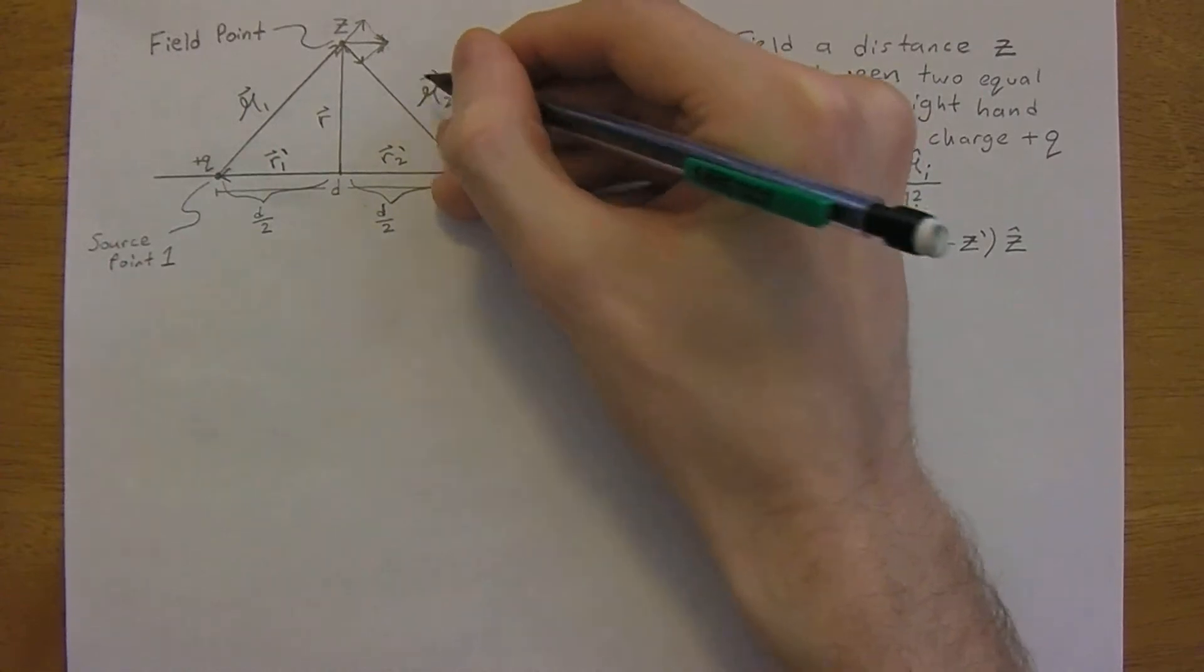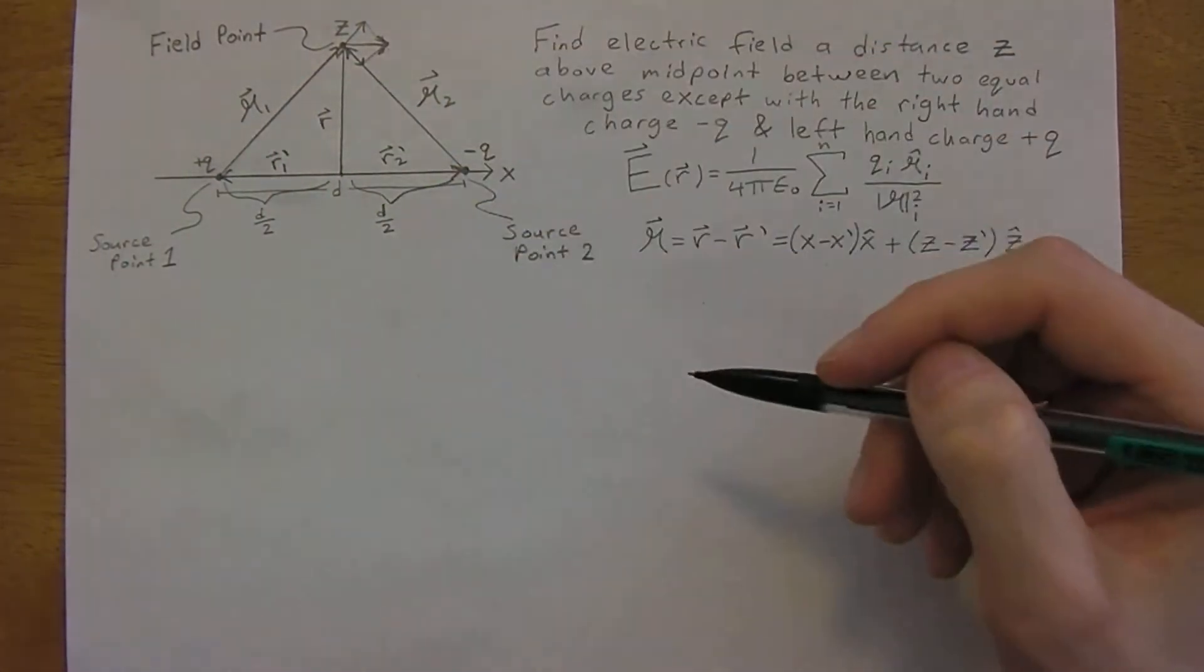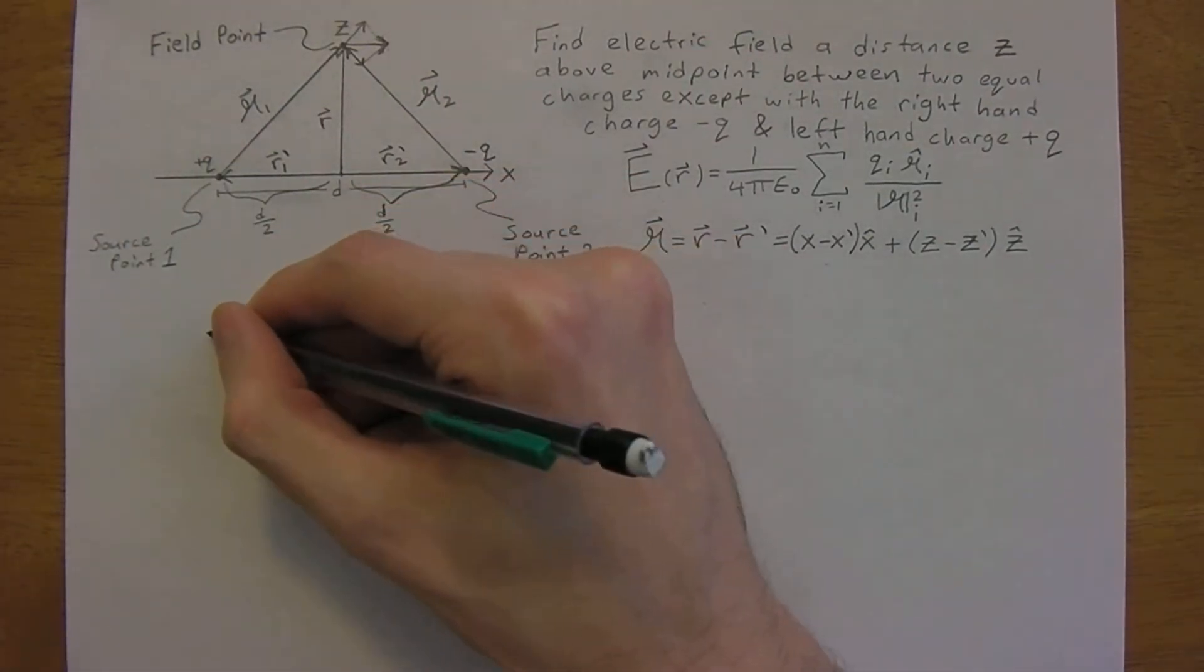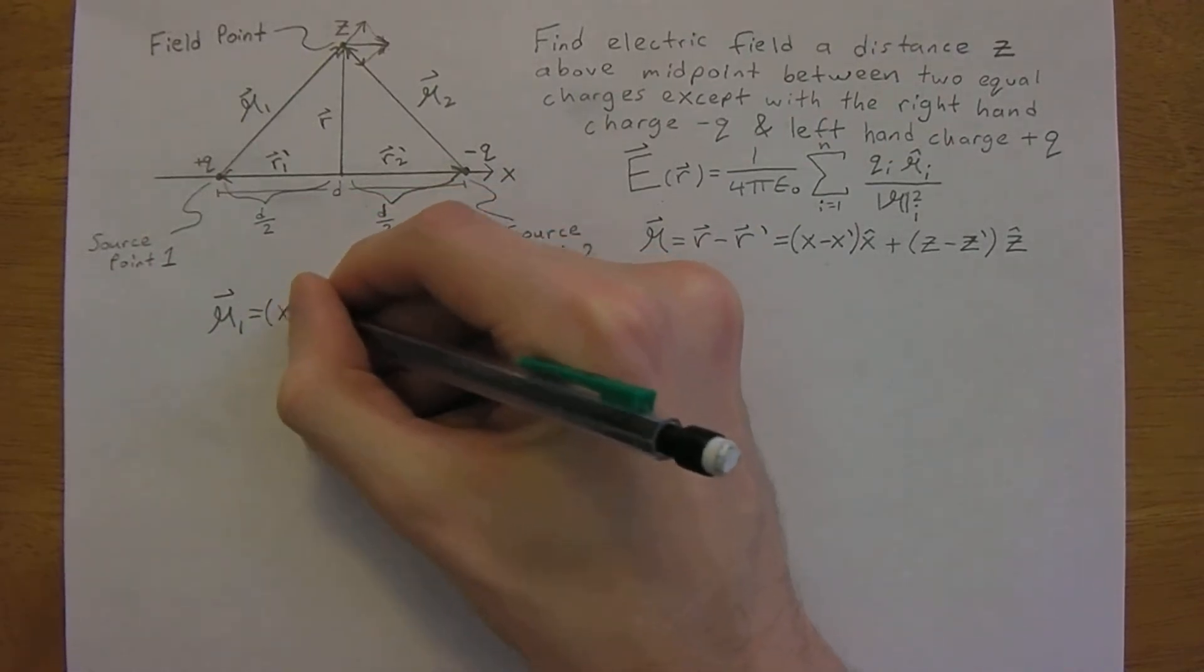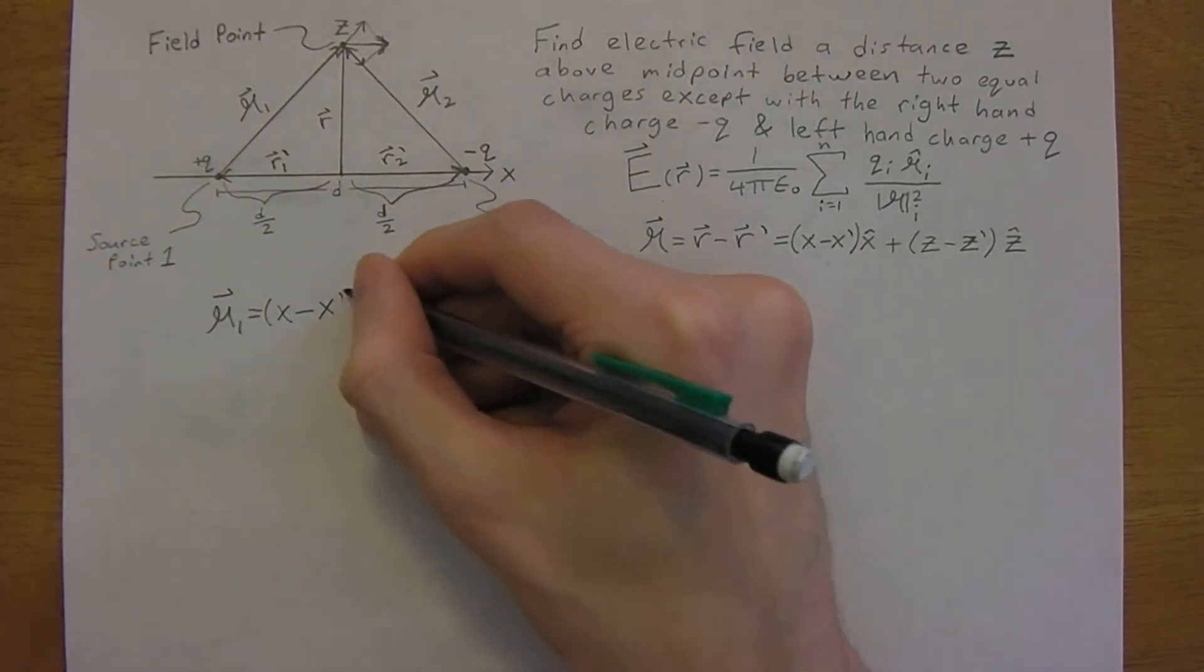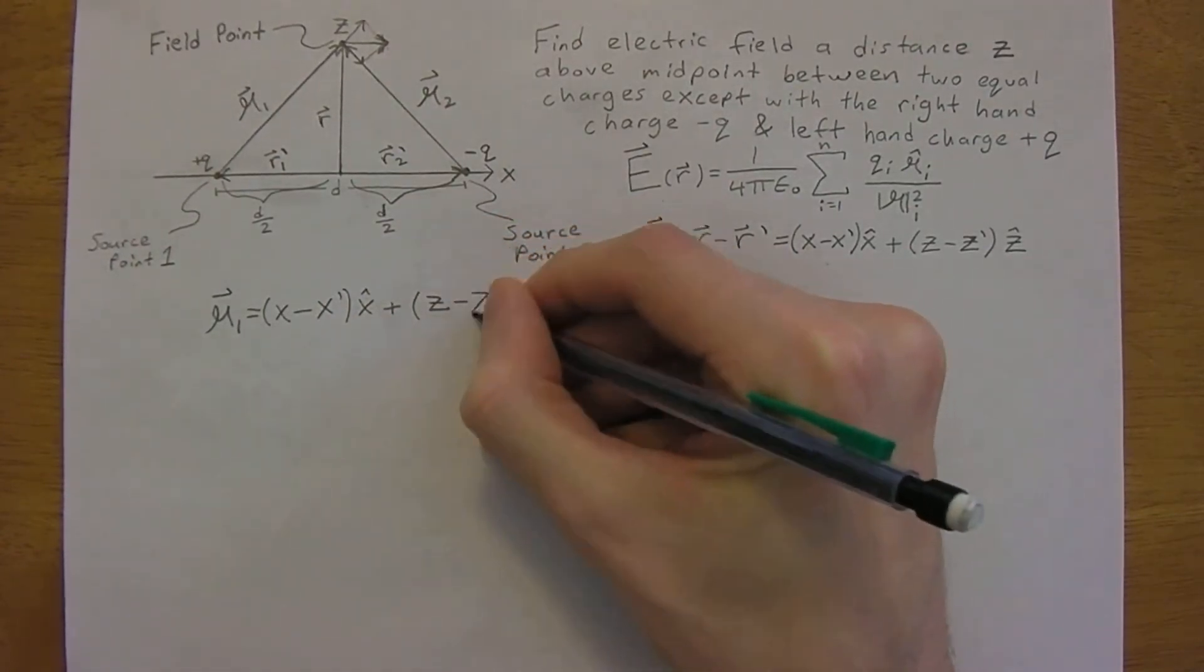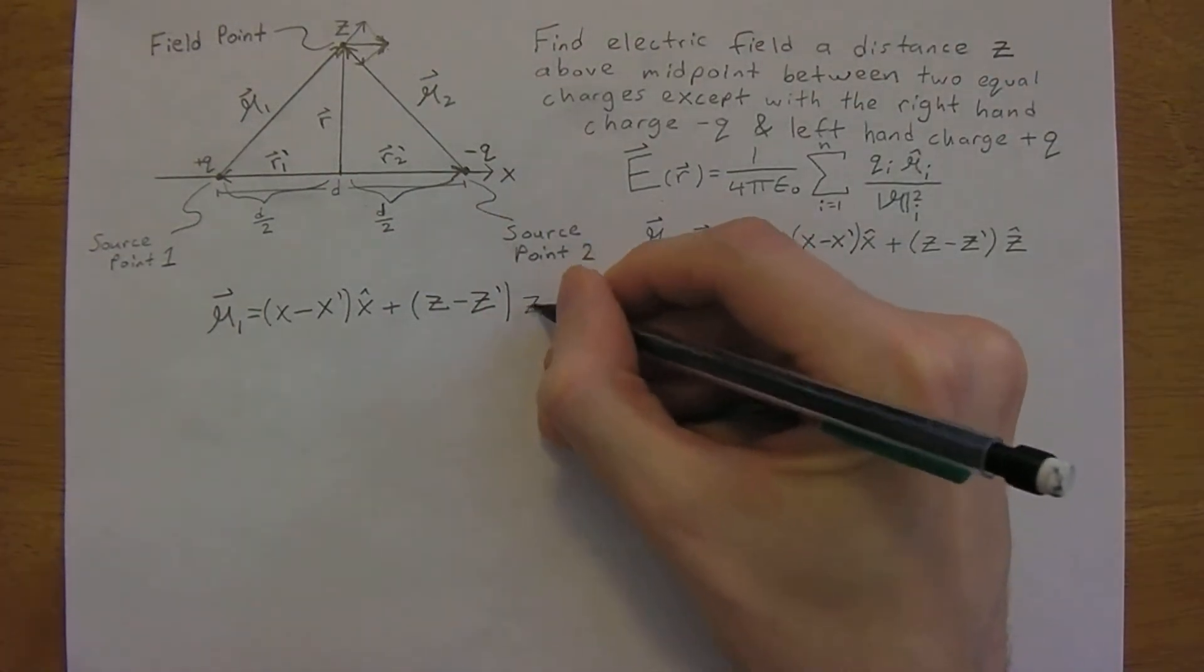Script r1 goes up like this, script r2 goes from source point 2 to the field point. Okay, so now we just need to determine what script r1 is. That is x minus x not x hat, plus remember there's no y in this, we only have the x and z axis, z hat.